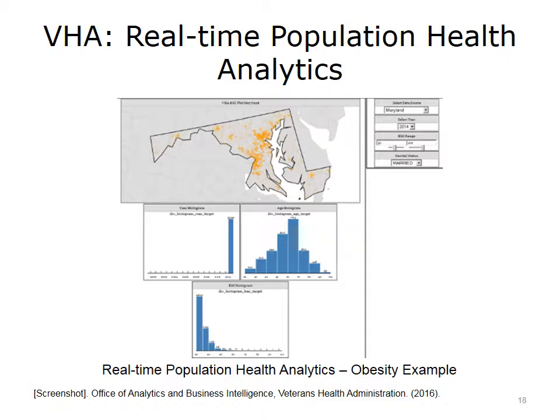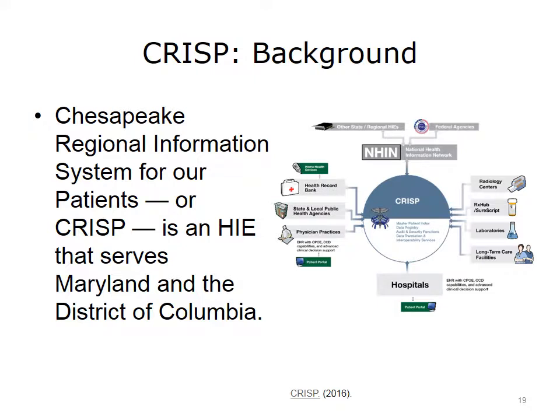Health information exchanges play a considerable role in utilizing population health predictive models on their centralized data warehouses, and then disseminating the results to clinical providers at the point of care. One example is Maryland's HIE. Chesapeake Regional Information System for our Patients, or CRISP, is a regional HIE that serves Maryland and the District of Columbia. CRISP receives from and exchanges data to various entities, including health records banks, state and local public health agencies, physicians' practices, radiology centers, medication hubs, laboratories, long-term care facilities, and hospitals.